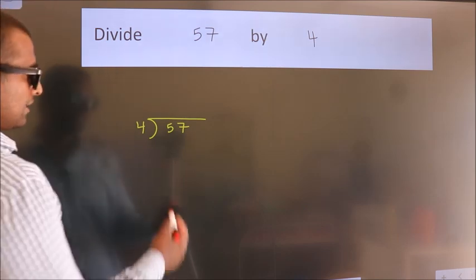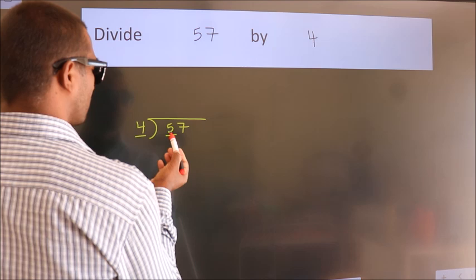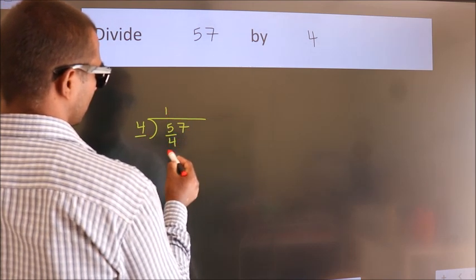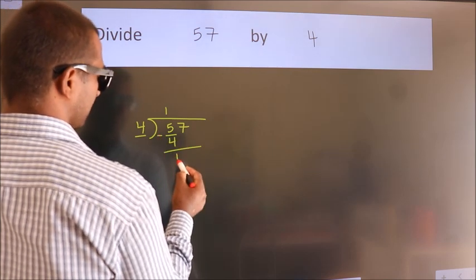Next. Here we have 5, here 4. A number close to 5 in 4 table is 4 once 4. Now we should subtract. We get 1.